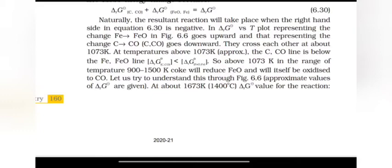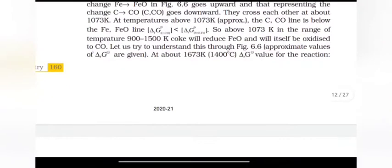FeO line, so above 1073 Kelvin, in the range of temperature 900 to 1500 K, CO will reduce FeO and will itself be oxidized to CO2. Let's just try to understand this through figure 6.6. At about 1673 Kelvin,